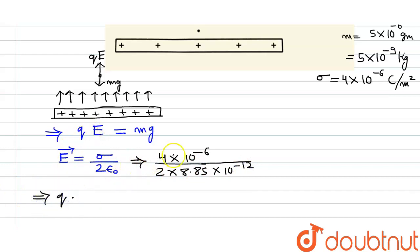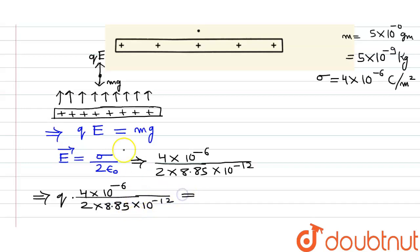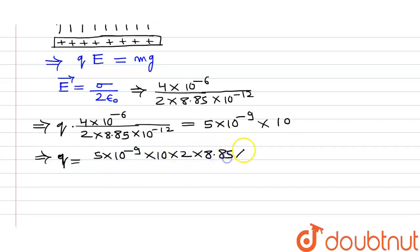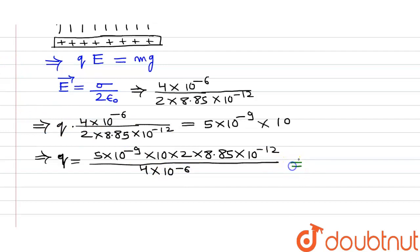Now we put this into the equation: q × (4×10⁻⁶) / (2 × 8.85×10⁻¹²) = mg = 5×10⁻⁹ kg × 10 m/s². Solving for q: q = (5×10⁻⁹ × 10 × 2 × 8.85×10⁻¹²) / (4×10⁻⁶), which gives a final answer of q = 2.21×10⁻¹³ coulomb. This is the charge that should be on the particle so it does not fall.